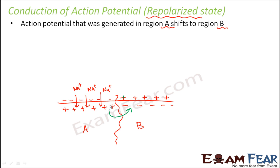This current flow happens on the inner surface. On the outer surface, it will just be the opposite — current will flow from region B to region A. And this is how the circuit will get completed: inner side A to B, outer side B to A.